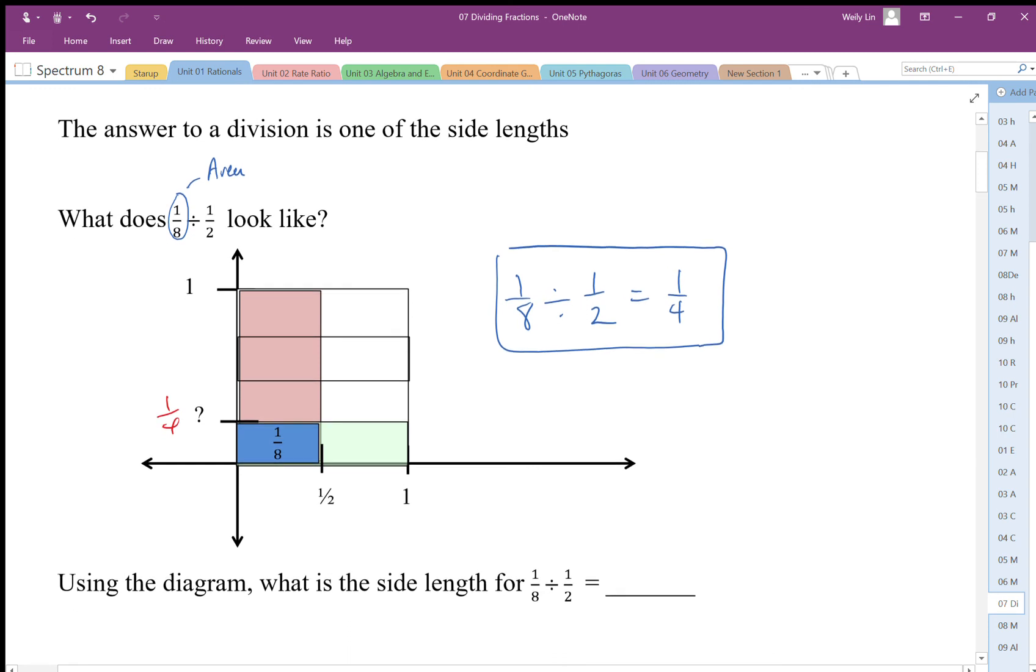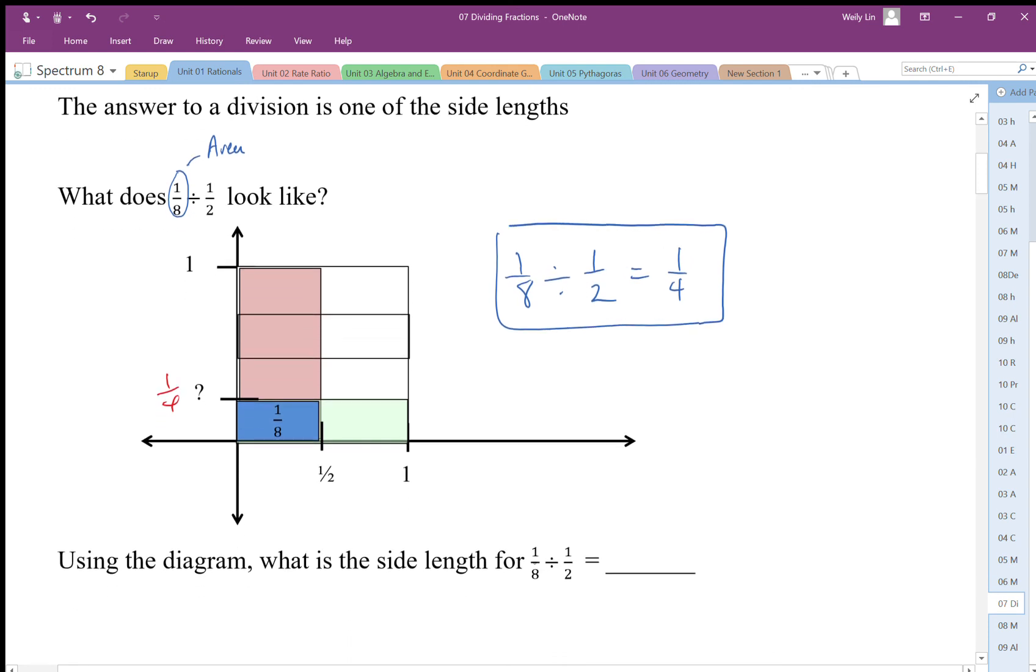So from this diagram we just did it right up here—the side length for ⅛ area divided by side length ½ gives us the other side length of ¼.